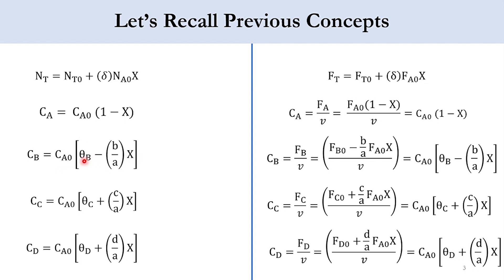We know that theta_B is equal to initial moles of B divided by initial moles of A. For C and D, the denominator will remain the same. For C of C, it is Ca0 times (theta_C plus c/a times X), and for D it is Ca0 times (theta_D plus d/a times X). A negative sign means it's a reactant and a positive sign means it's a product.